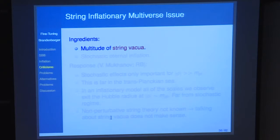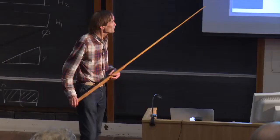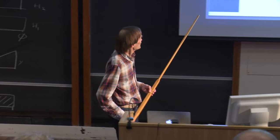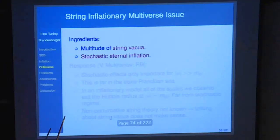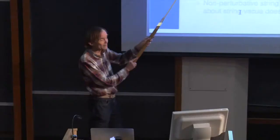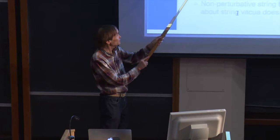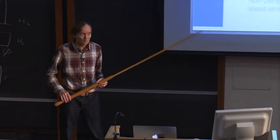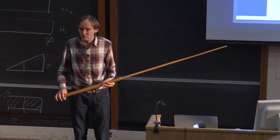The next issue is the string inflationary multiverse issue, and here what I'm going to say will be much more controversial. The claim is: there's a multitude of ground states of string theory, and stochastic eternal inflation — not just classical inflation, but stochastic quantum effects — will populate all of these string vacua. Therefore we can't know which vacuum we end up in, and this is a big problem for predictability. Andre Linde would completely agree with these ingredients.